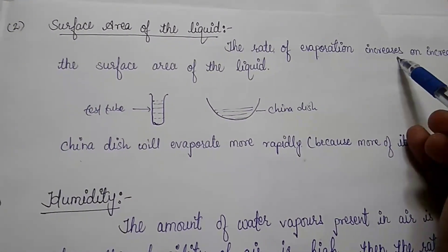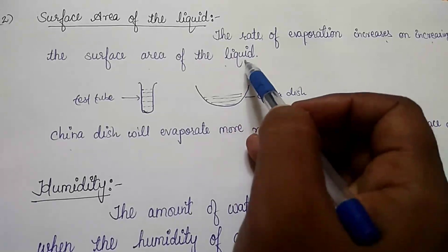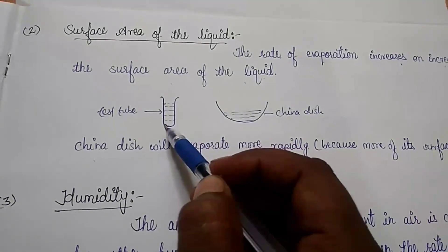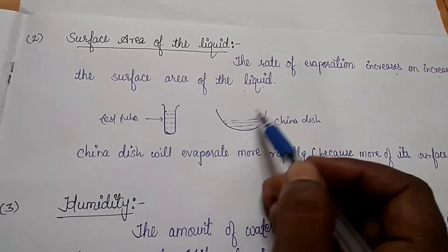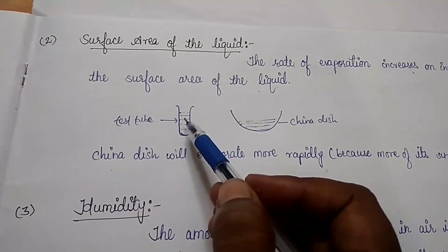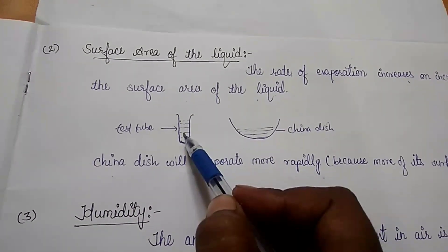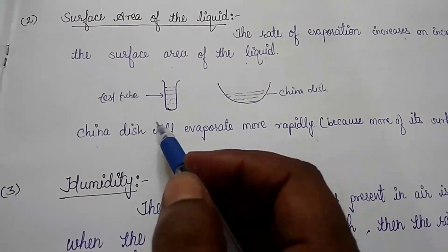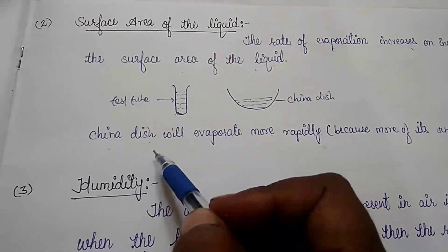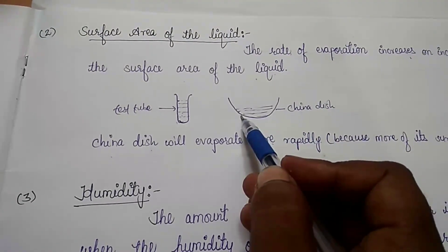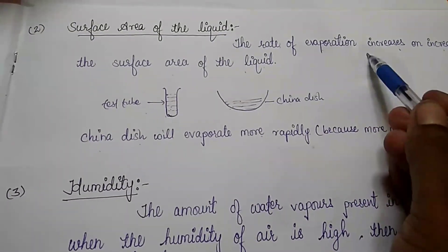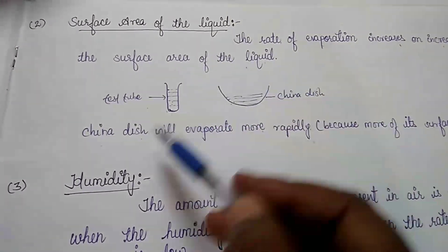Second factor — surface area of the liquid. The rate of evaporation increases on increasing the surface area of the liquid. We have taken two containers: a test tube and a china dish. We keep hot milk in both. After a while, we observe that the milk in the china dish evaporates more rapidly compared to the test tube, because the china dish has more surface area. So the rate of evaporation increases on increasing the surface area of the liquid.